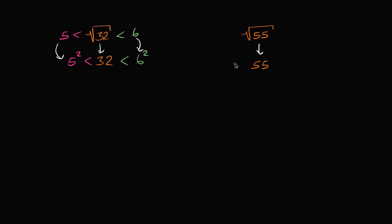So the perfect square that is below 55, or I guess the greatest perfect square that is less than 55. Let's see, 6 squared is 36, then 7 squared is 49, 8 squared is 64. So it would be 49.